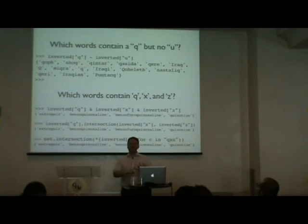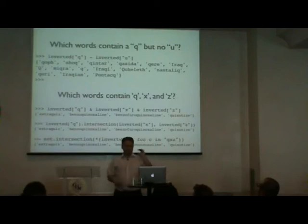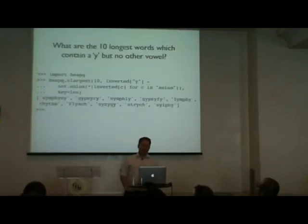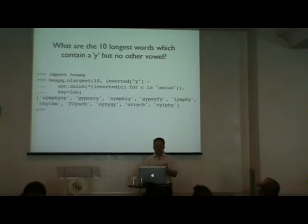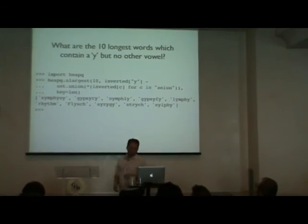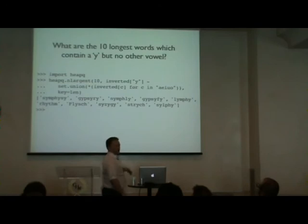Combining the inverted index with heapq, I can ask: of all words containing Y with no other vowel, give me the ten largest. The sky isn't in there — too small — but I find longer words with this strange property. Believe it or not, I've actually used two of those: 'rhythm' and 'syzygy'. If you play Scrabble, you'll find this useful.